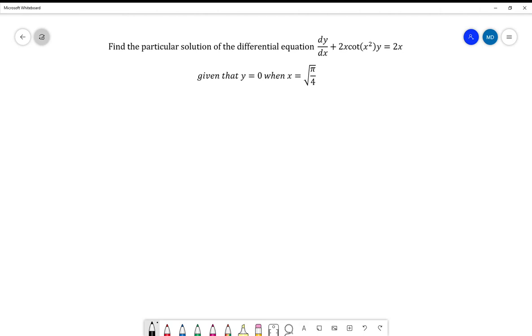And this is the example that we'll be going through. Find the particular solution of the differential equation dy/dx + 2x cot(x²)y = 2x, given that y = 0 when x = √(π/4).